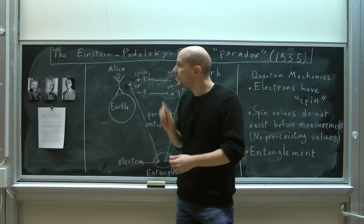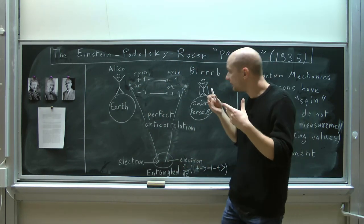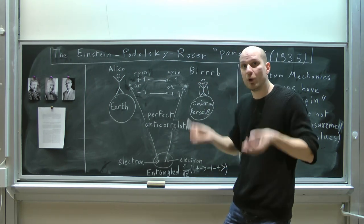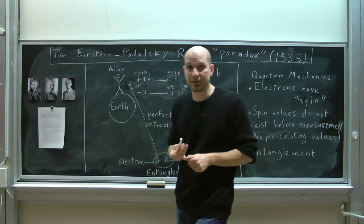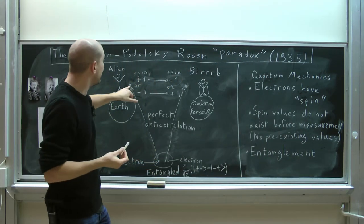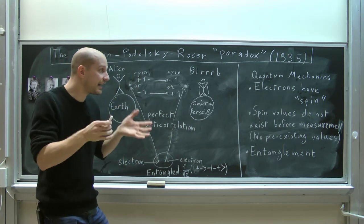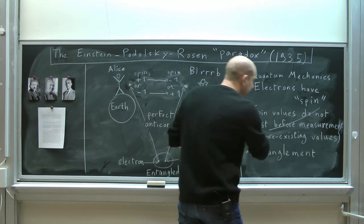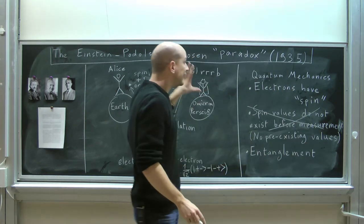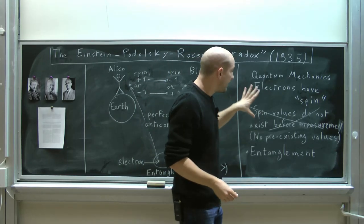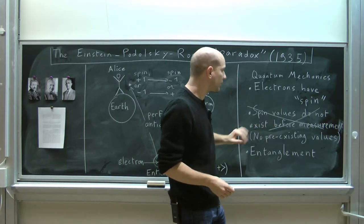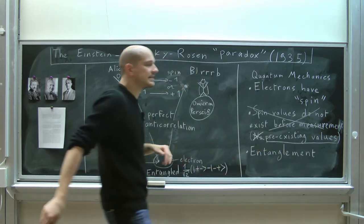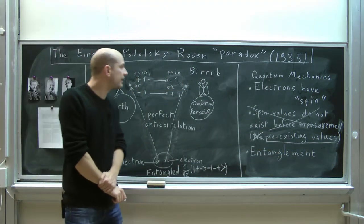EPR argued that the only way this can be true without violating the principle of locality is if the spins of the electrons actually had values before they were measured. In other words, the EPR argument says that if locality is to be true, then this idea from quantum mechanics must not hold, and there must exist pre-existing values for the spins of the electrons.